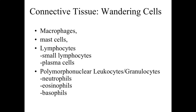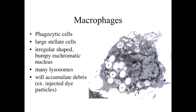These wandering cells will include things like macrophages, mast cells, lymphocytes or small lymphocytes, and plasma cells, as well as polymorphonuclear leukocytes — another type of white blood cells, basically the neutrophils, the eosinophils, and the basophils. So we're going to take a look at these in a little bit more detail.